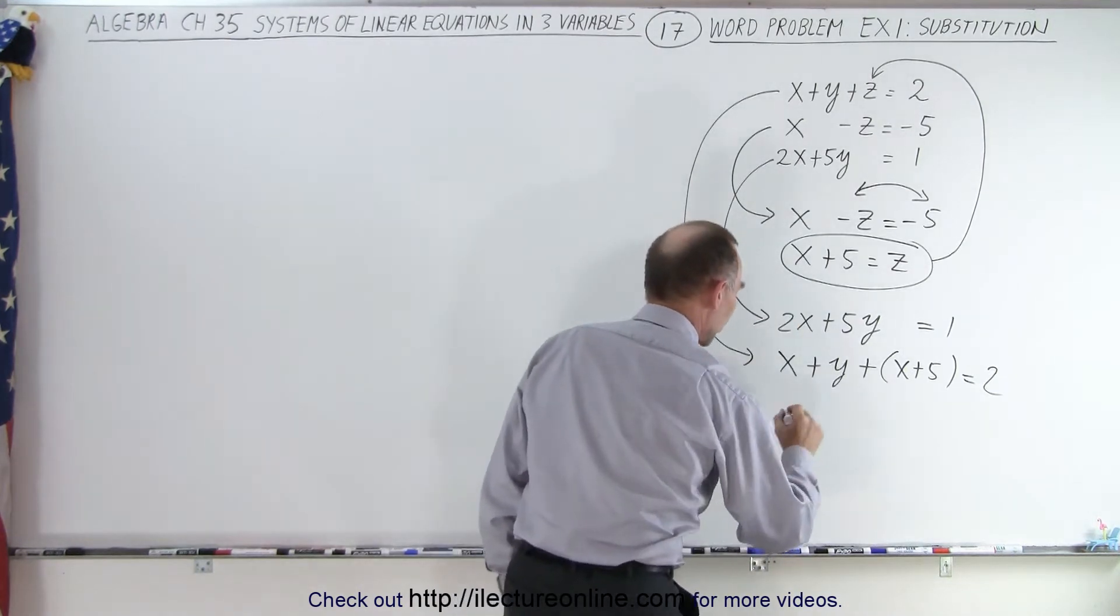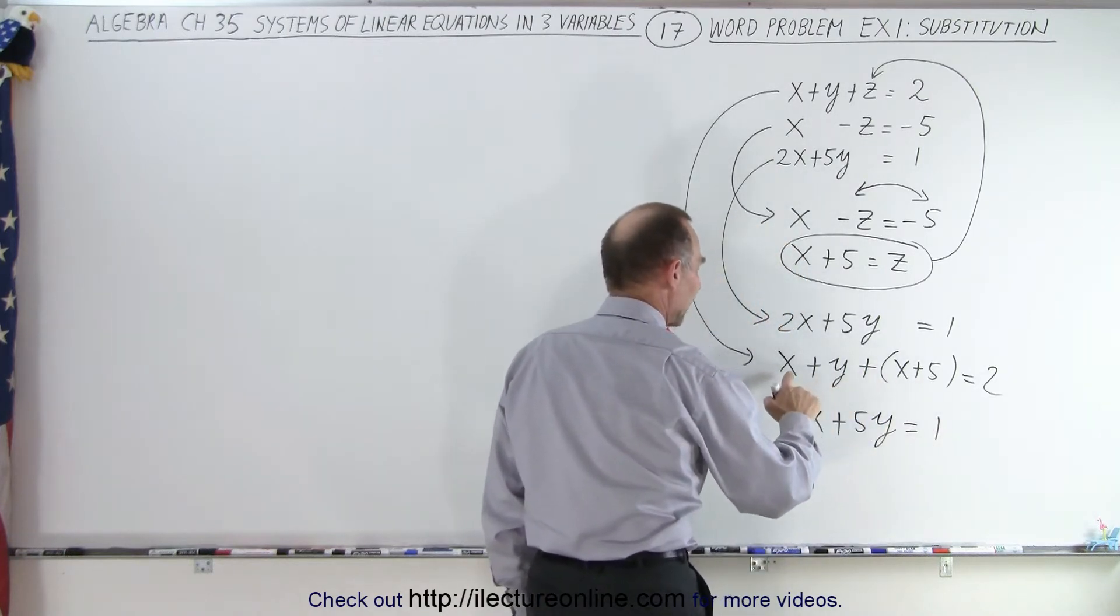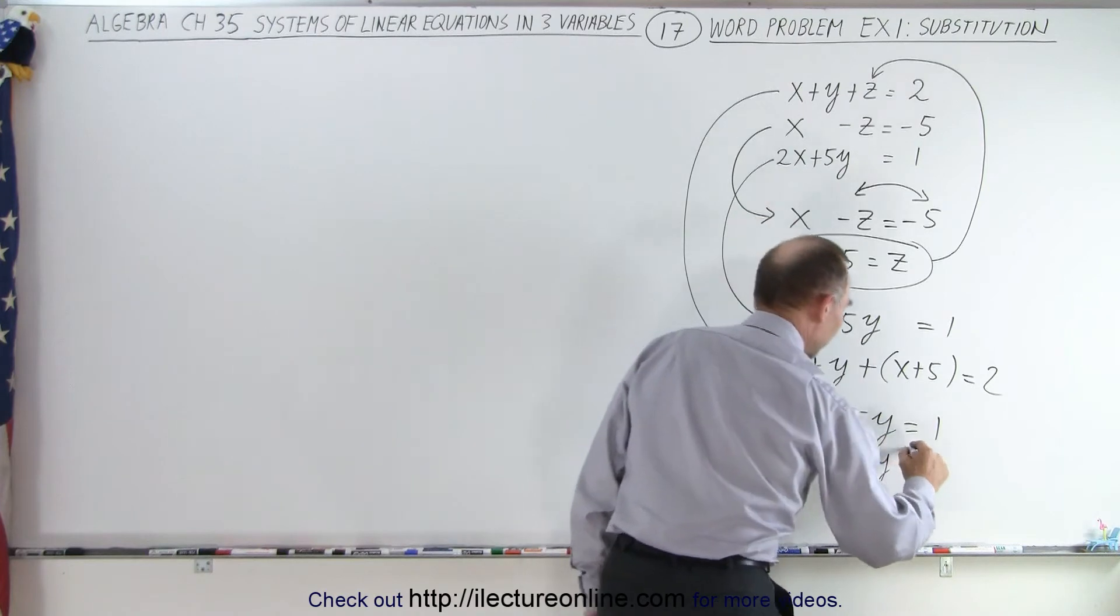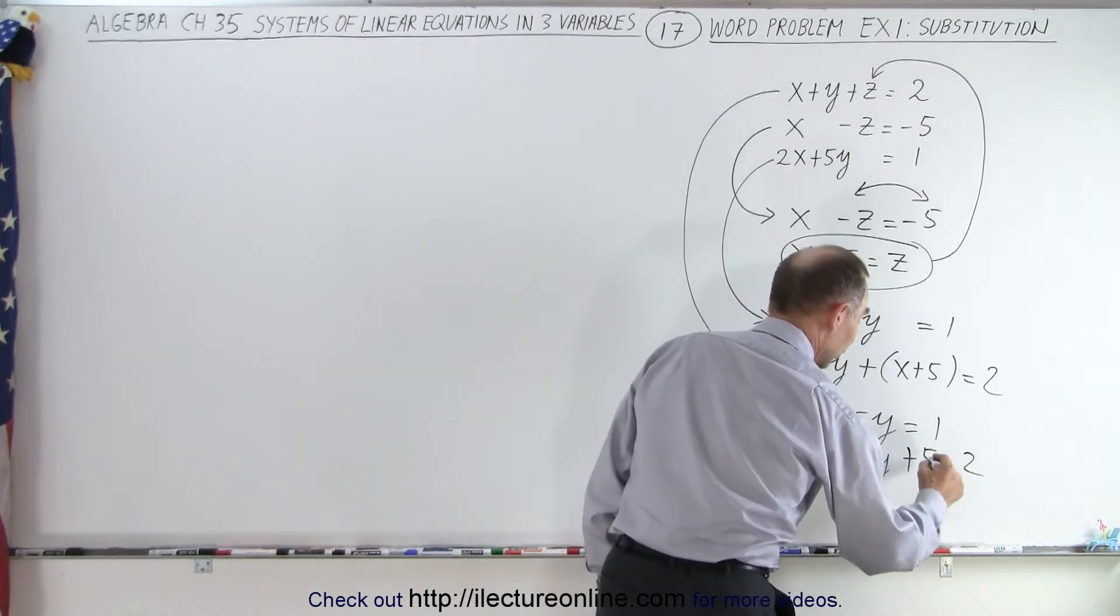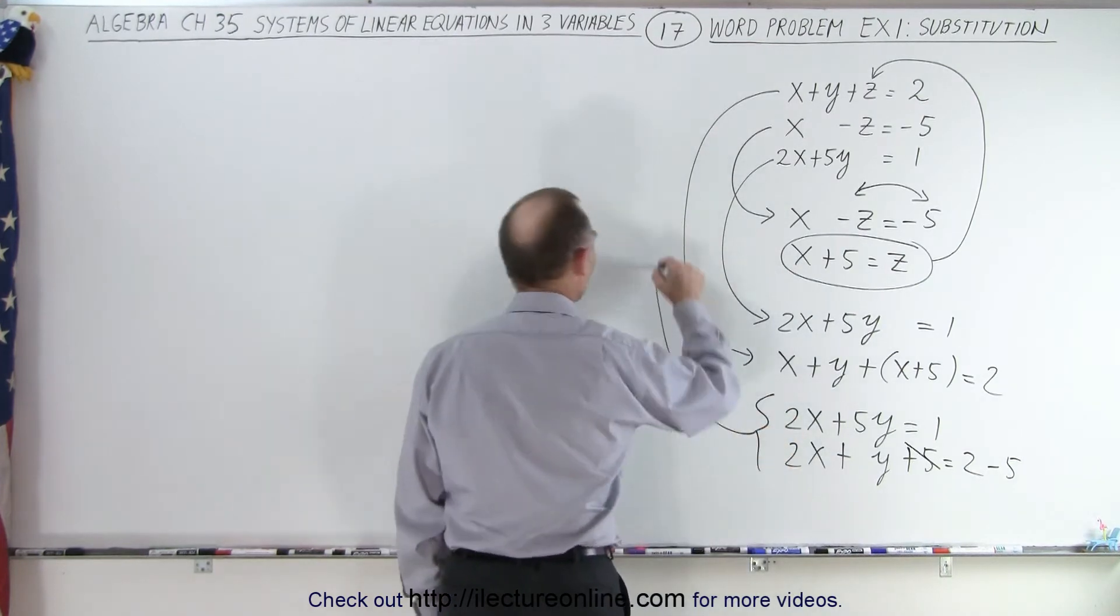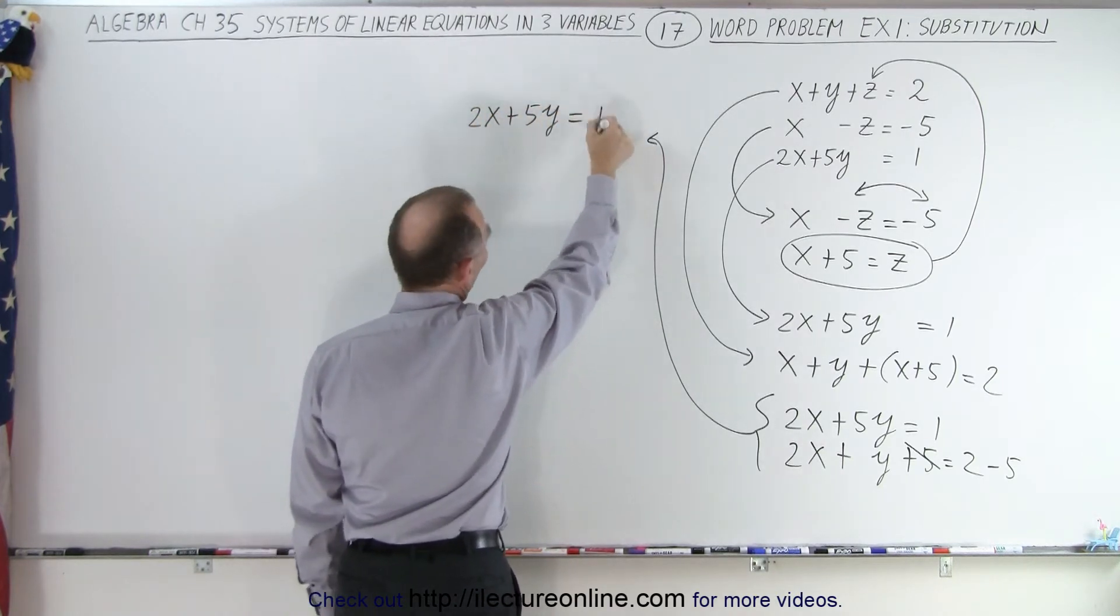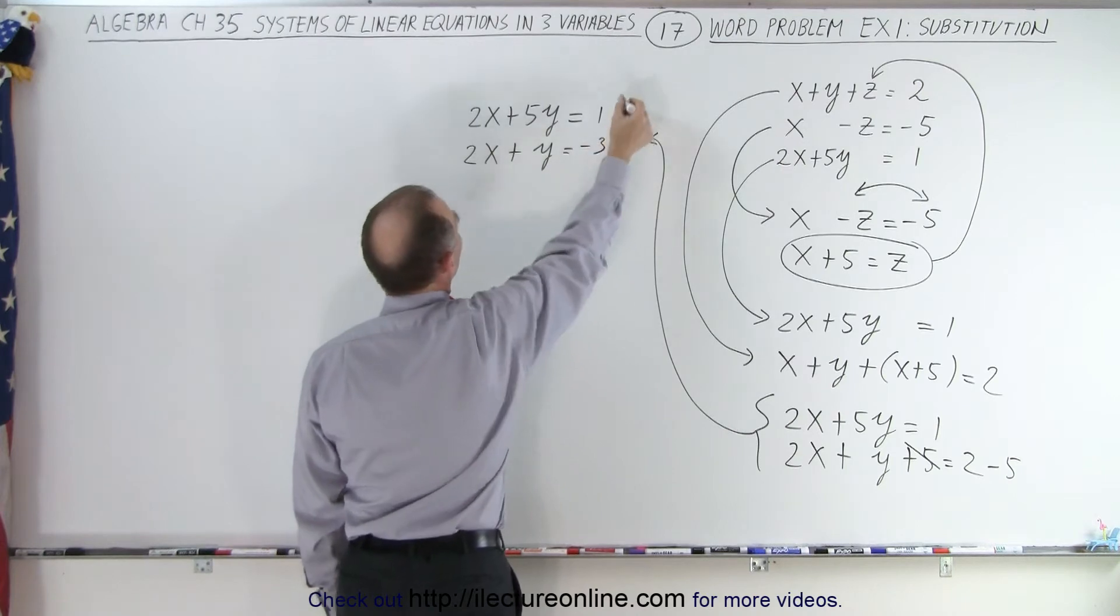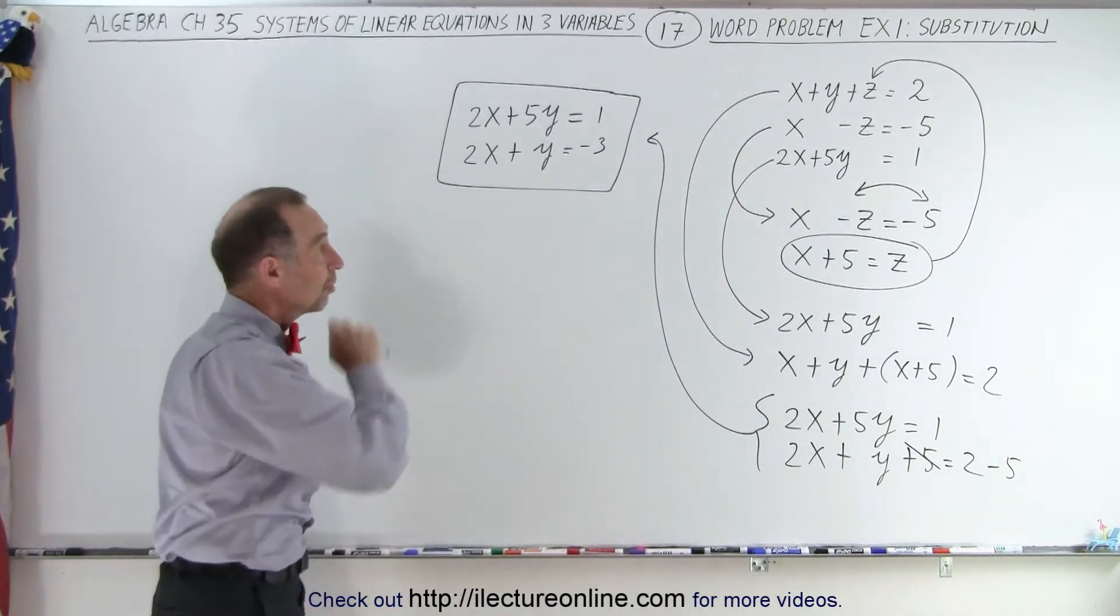Now we want to simplify those two equations. The first equation gives us 2x plus 5y is equal to 1. And the second equation, we have x plus x, which gives us 2x. We have y plus y, and then here we have a plus 5 on the left side equals 2 on the right side. What we want to do is move the plus 5 to the right side. The plus 5 becomes the negative 5 over here. So then the two equations, we end up with 2x plus 5y is equal to 1, and the second equation becomes 2x plus y is equal to 2 minus 5 or negative 3. And now we end up with just two equations and two unknowns from the original three equations and three unknowns using the method of substitution.